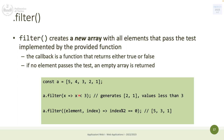To summarize: forEach iterates on the array and you decide what to do while iterating. 'every' tests whether all elements satisfy a condition, returning true or false. 'some' checks if at least one element satisfies the condition, returning true or false. 'map' lets you modify the array and returns a new array. 'filter' gives you a new array with the elements that satisfy a given condition.